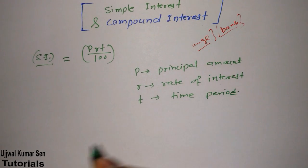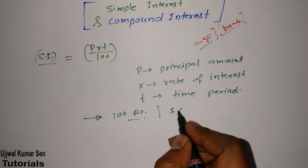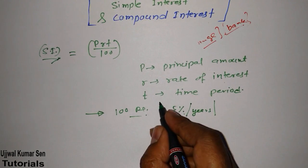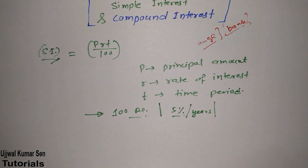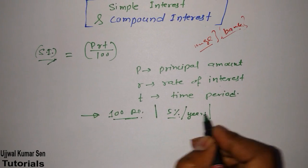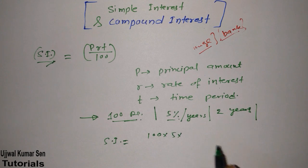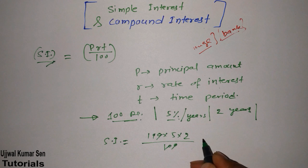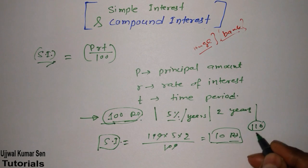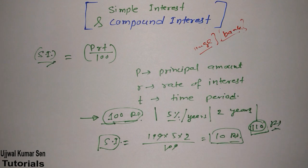Suppose you are depositing 100 rupees in a bank. The bank says they will give you 5% interest per year — simple interest, not compound. You said you will deposit this 100 rupees for two years. So the total interest is: SI = (100 × 5 × 2) / 100 = 10 rupees. So your total amount after 2 years would be 110 rupees. This is the way to find out simple interest.